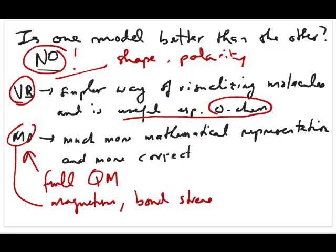But if you're talking about trying to predict magnetism, bond strength, bond length, and odd number of electrons, then it's a lot easier to use the MO model to explain bonding that you observe. So in other words, you want to think of these two theories as complementary to each other, not necessarily competing with each other.